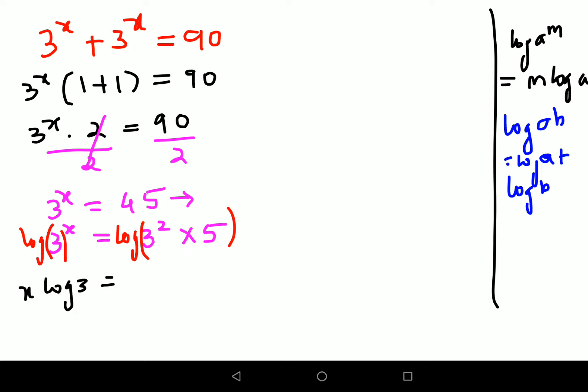So this will be now written as log 3. Instead of square, I will put the 3 over here, right, using the same logic. So this is 2 log 3 plus log 5.